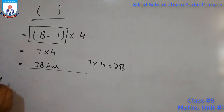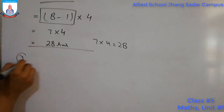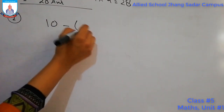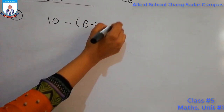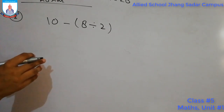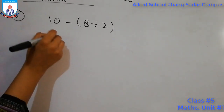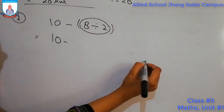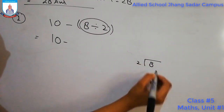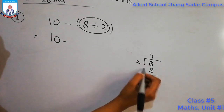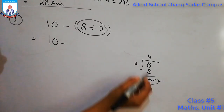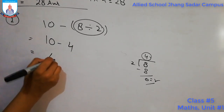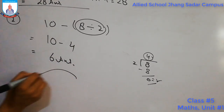Similarly, let's solve another example: 10 − (8 ÷ 2). We have a bracket inside. We need to solve the bracket first. 8 divided by 2 — as we know, 2 fours are 8 — gives 4 with remainder 0. So 4 is our answer for the division. Then 10 − 4 equals 6. So 6 is our final answer.